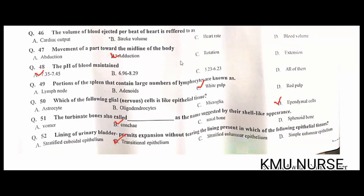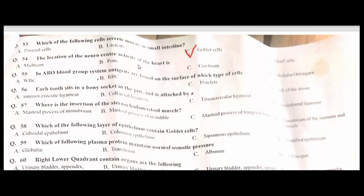Which of the following cells secretes mucus in the small intestine? Goblet cell. C is the correct option. The location of the neurocentre controlling activity of the heart is the medulla oblongata. D is the correct option.